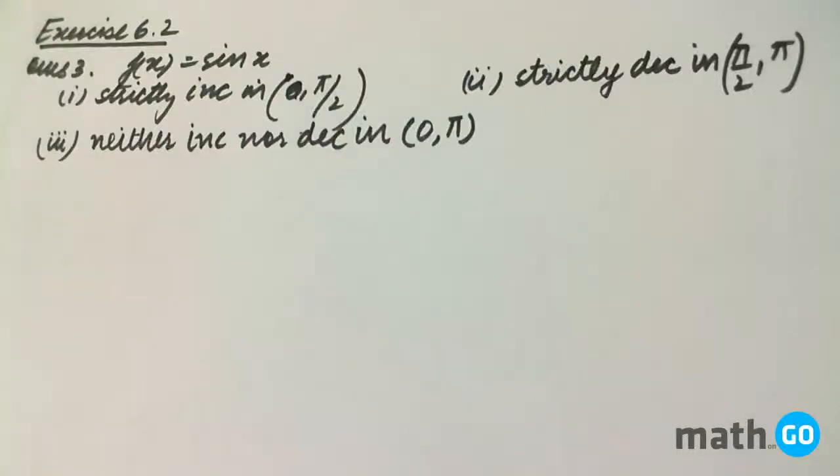Exercise 6.2, question number 3. It says that the function f(x) equals sin x is strictly increasing in 0 to π/2, strictly decreasing in π/2 to π, and neither increasing nor decreasing in 0 to π.